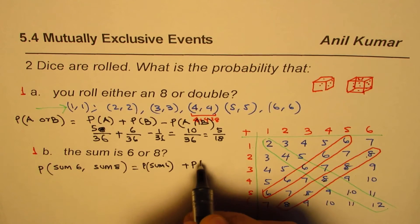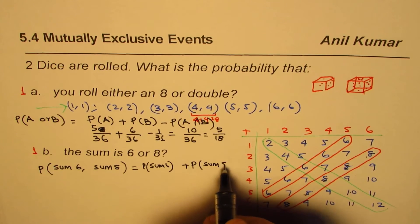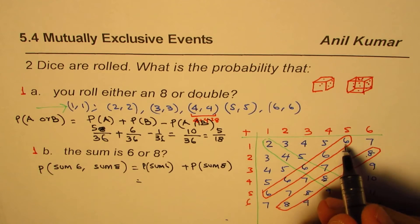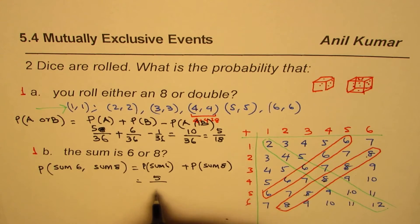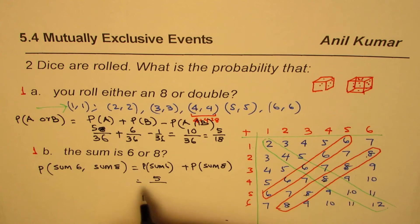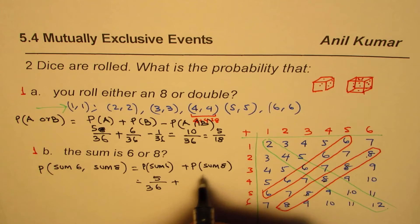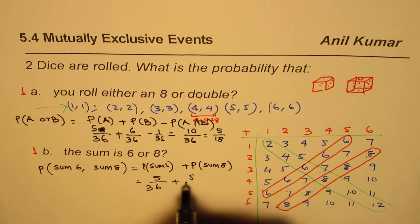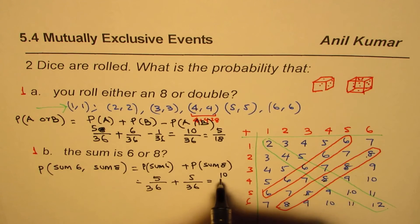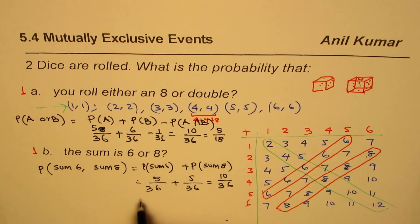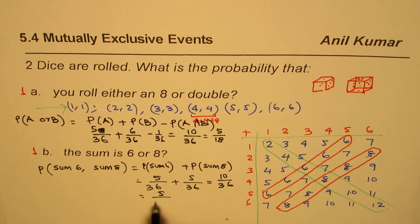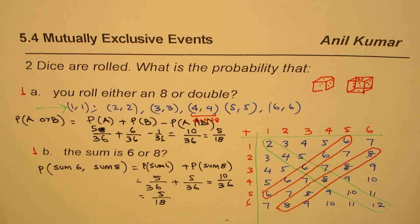For mutually exclusive events, P(sum of 6 or sum of 8) = P(sum of 6) + P(sum of 8). There are five ways to get a sum of six, so 5/36, and five ways to get a sum of eight, so 5/36. That gives us 10/36, which simplifies to 5/18.